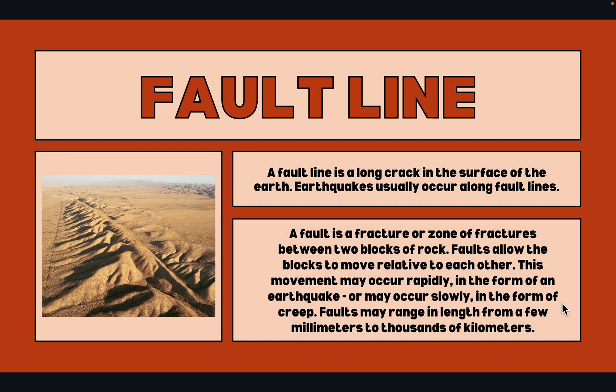So, what is a fault line? A fault line is a long crack in the surface of the Earth. Earthquakes usually occur along fault lines. A fault is a fracture or zone of fractures between two blocks of rock. Faults allow the blocks to move relative to each other. This movement may occur rapidly in the form of an earthquake, or may occur slowly in the form of a creep, which I will cover in another video.